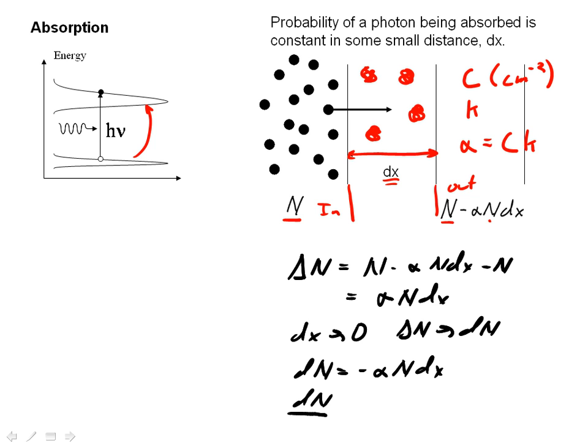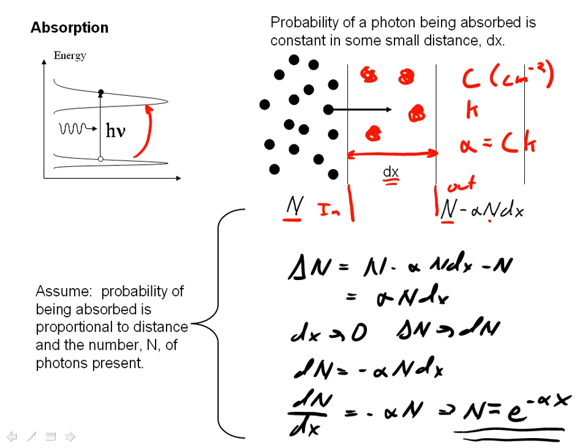Then we can actually solve this differential equation to find N is equal to, within some constant, e to the minus alpha x. This is important because it says how the number of photons changes as they go through a material that has loss proportional to alpha, where alpha is simply the concentration times some number of molecules. What we're assuming when we do this is we assume the probability of being absorbed is proportional to the distance and the number of photons present.